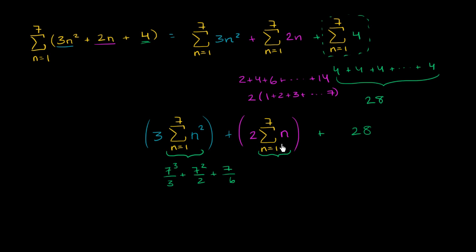And this sum, you could view it as the average of the first and the last term. So the first term is 1, the last term is 7. So take their average and then multiply it times the number of terms you have, so times you have 7 terms.